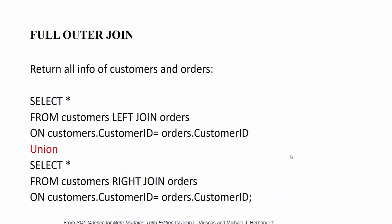For another example, we look for all information about customers and orders — customers with orders, customers without orders, and orders without customers. We combine left and right joins and use UNION to merge the results, which removes all duplicate rows from the final result. Using UNION ensures no duplicated rows appear in the search output.